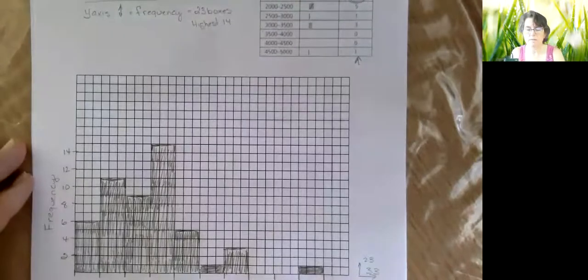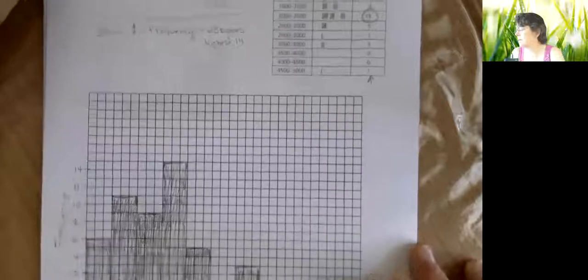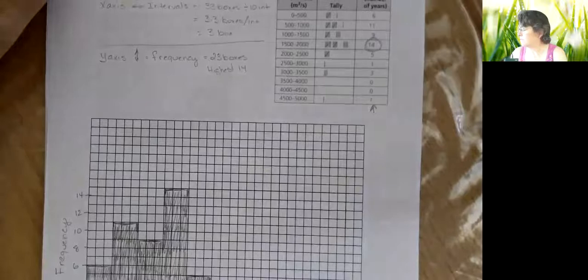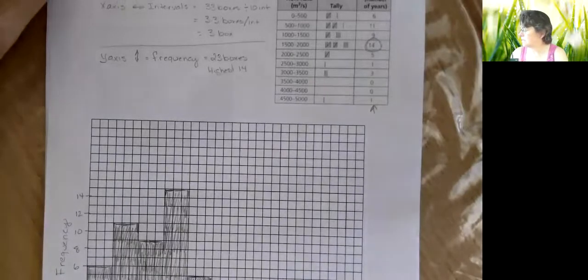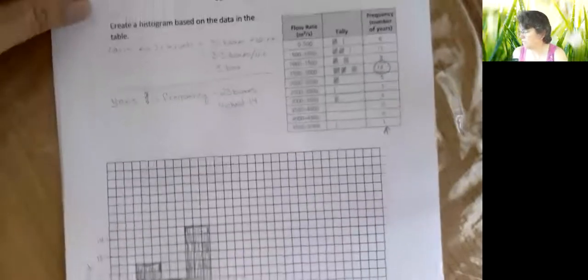All right, so the only thing we forgot to mark is we need a title for our chart. And I'm just going to flip back, and this was maximum flow rate.